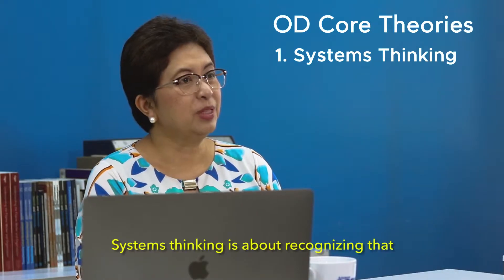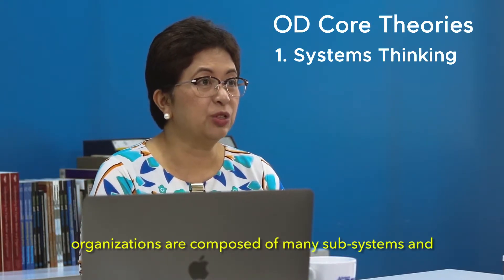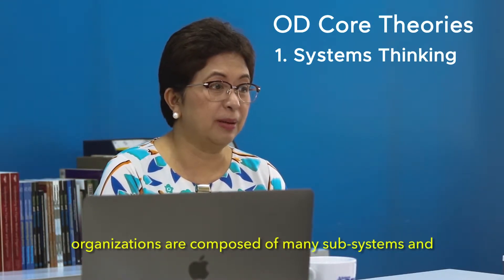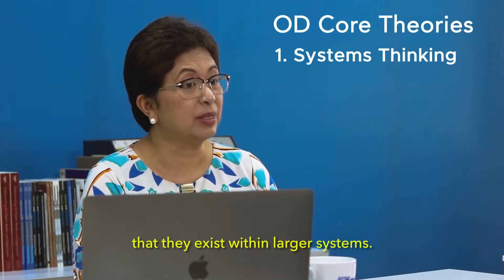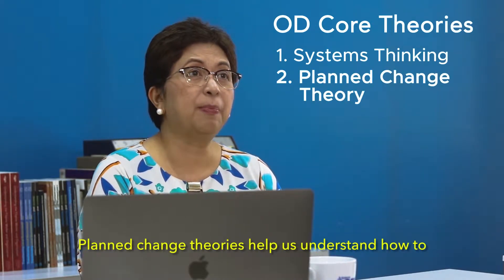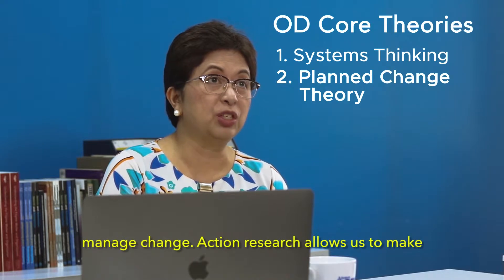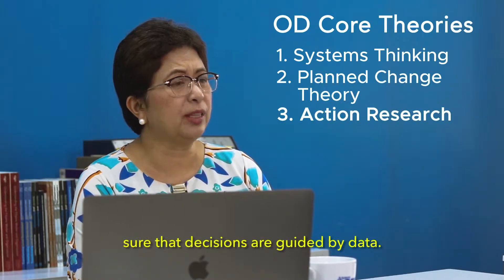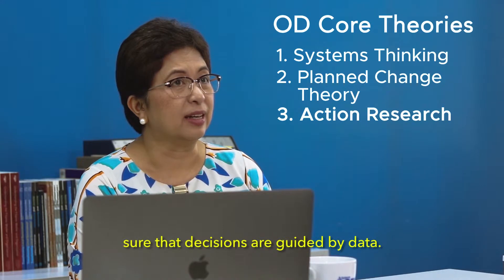Systems thinking is about recognizing that organizations are composed of many subsystems and that they exist within larger systems. Planned change theories help us understand how to manage change. Action research allows us to make sure that decisions are guided by data.